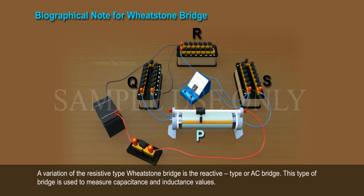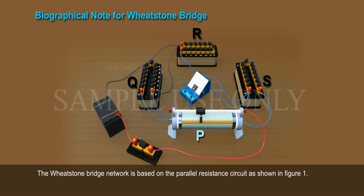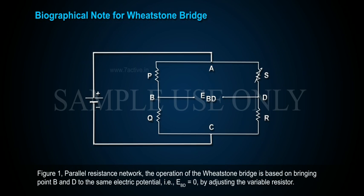A variation of the resistive type, Wheatstone Bridge, is the reactive type or AC bridge. This type of bridge is used to measure capacitance and inductance values. The Wheatstone Bridge network is based on the parallel resistance circuit, as shown in Figure 1: parallel resistance network.